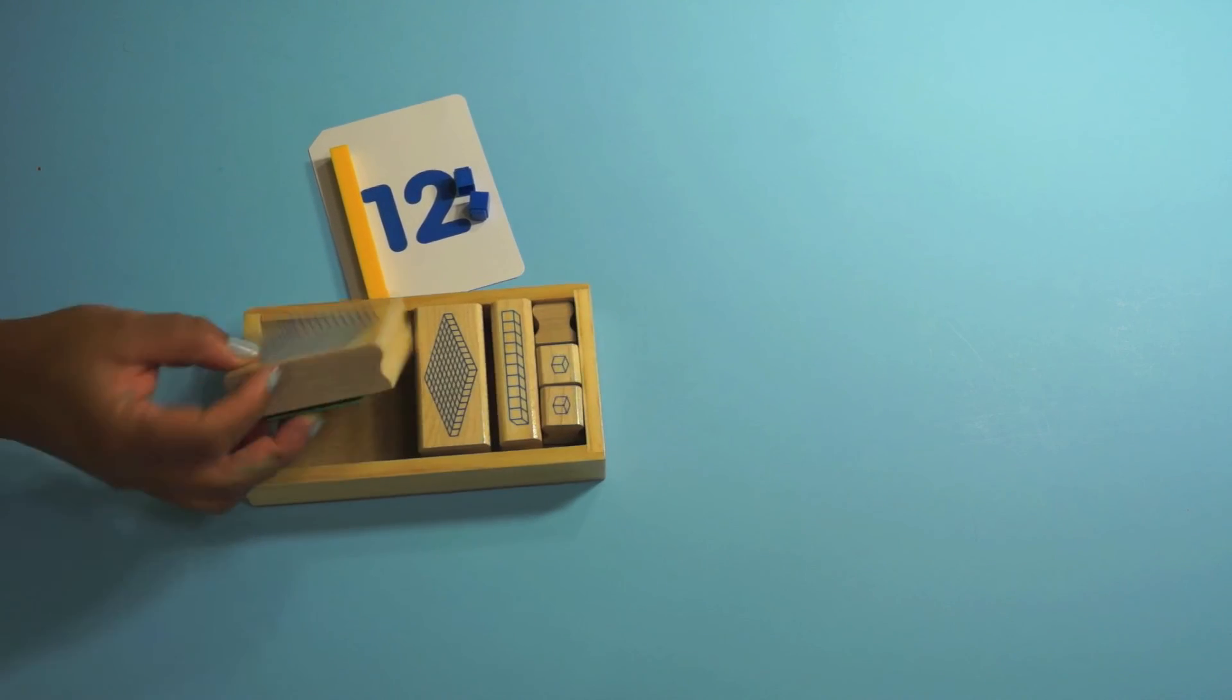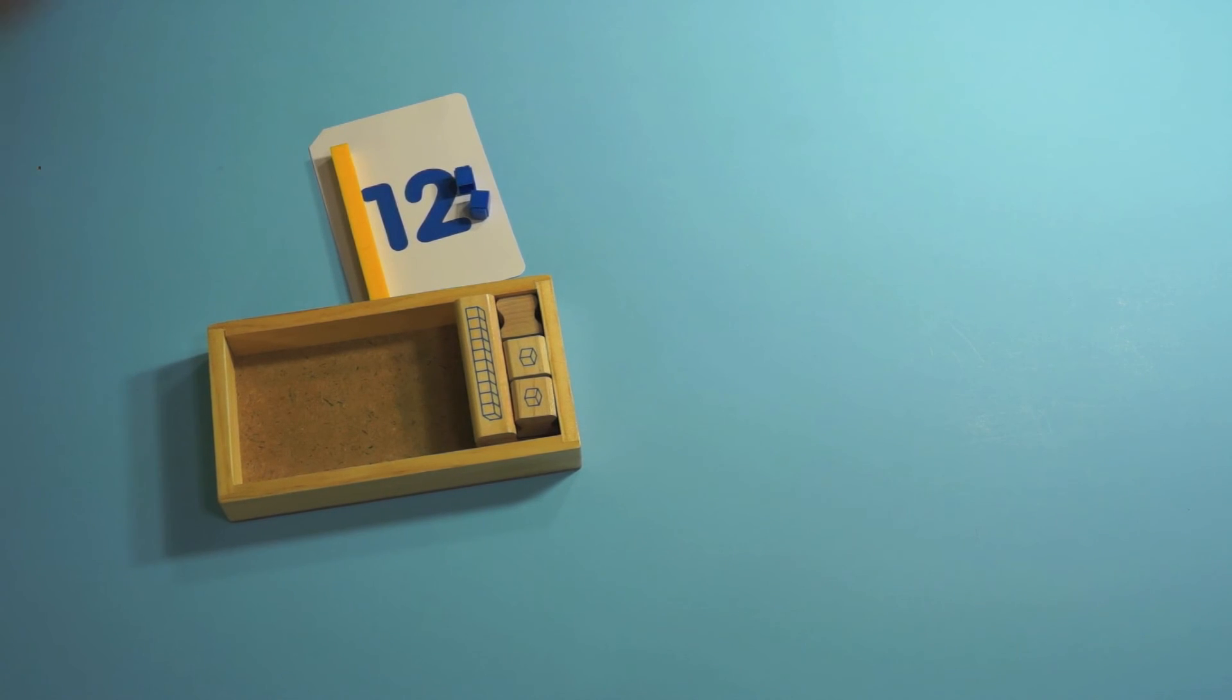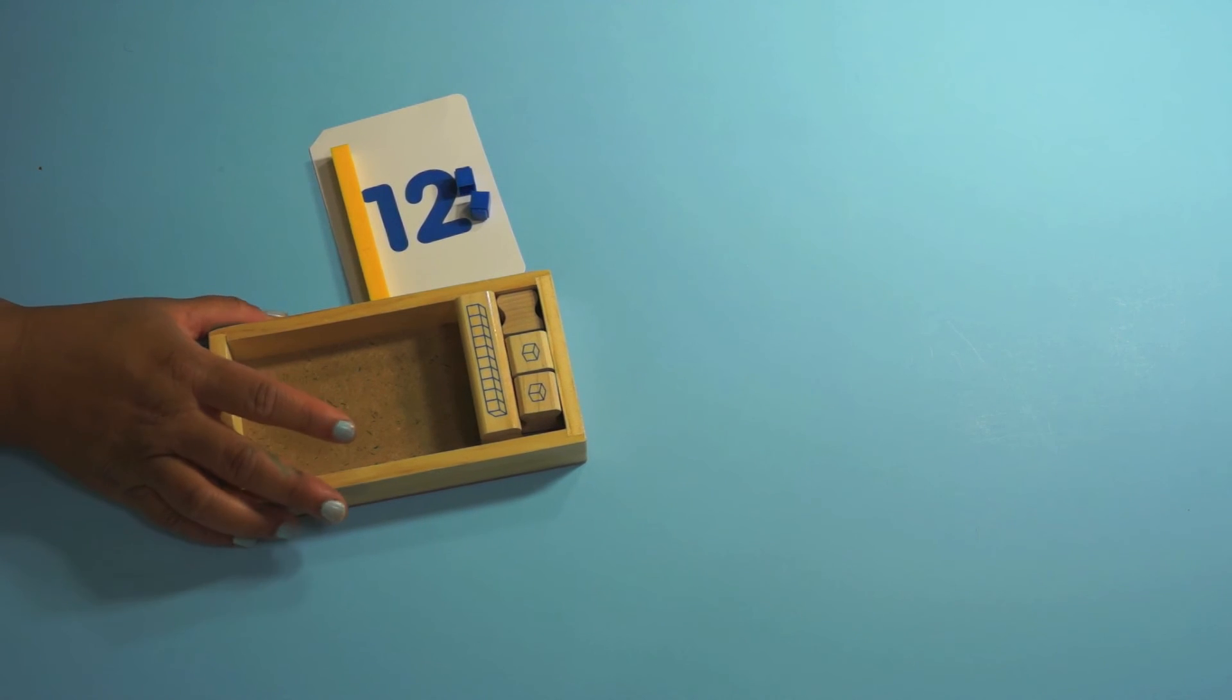The other thing I have kids do is I have a lot of place value stamps. And what I do is I take out the thousands, I take out the hundreds and the kids are just working with the tens and ones and they roll a number and stamp it out. So place value is a huge standard in first grade and comparing numbers is another huge standard in first grade.